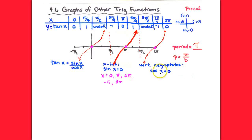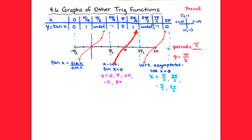For vertical asymptotes, we set cosine equal to zero. Cosine equals zero at π/2, 3π/2, 5π/2, negative π/2 — the odd multiples of π/2. Sure enough, those are exactly where the vertical asymptotes appear on the graph. That gives us a fast, easy guide to know where to draw the tangent curve. That might seem like a lot of work for just one graph, but what if we could get all four remaining trig functions — tangent, cotangent, secant, and cosecant — from that same amount of work?